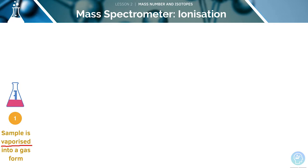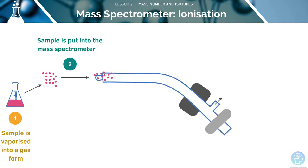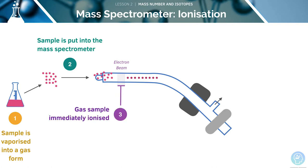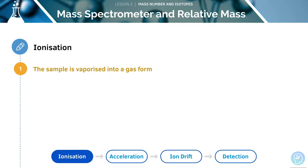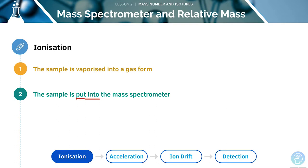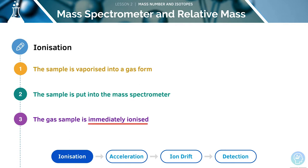Before we begin, the sample must be vaporised into a gas form. Then the sample is put into the mass spectrometer, where it is immediately ionised, meaning it is given a charge. Ionisation can occur by one of two methods. The first is electrospray ionisation, where a voltage is applied, causing each particle to gain a hydrogen ion. This converts the sample into a gas made up of positive ions.